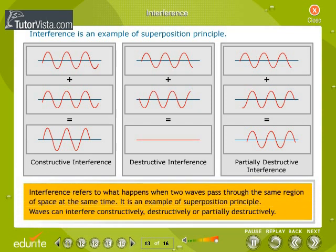Interference refers to what happens when two waves pass through the same region of space at the same time. It is an example of superposition principle. Waves can interfere constructively, destructively, or partially destructively.